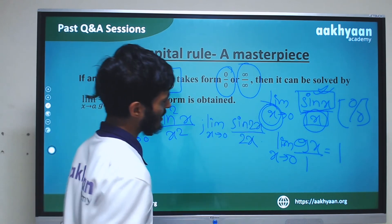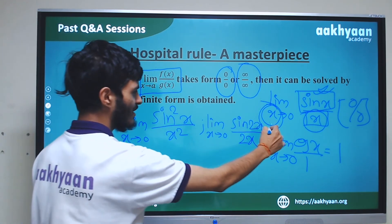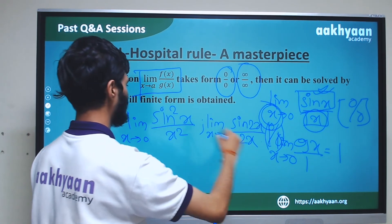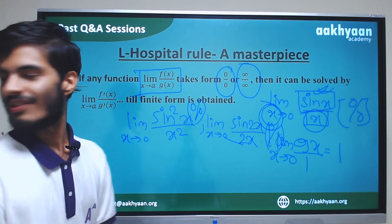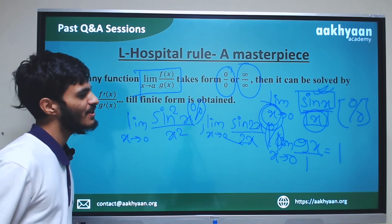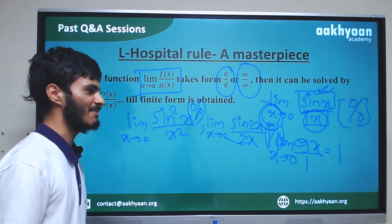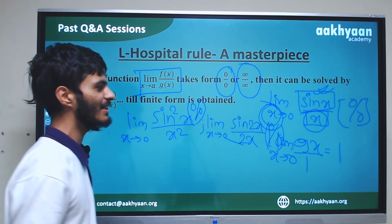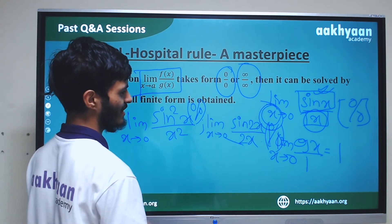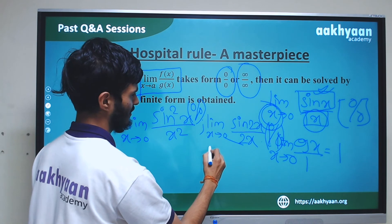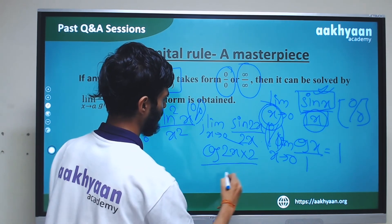Now, limit x tends to 0 of sin 2x by 2x still gives 0 by 0, so we apply L'Hôpital's Rule again. The derivative of sin 2x with respect to x is cos 2x times 2, divided by the derivative of 2x which is 2. This simplifies to cos 2x.